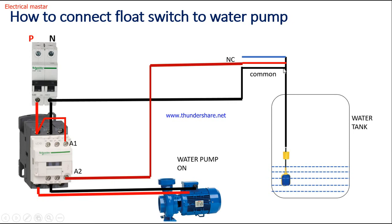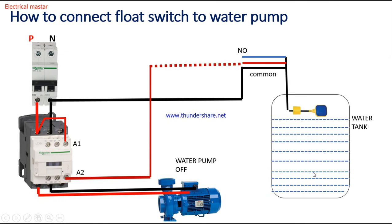Whatever you give to the common supply, you can receive it from the NC terminal. So what we do is take the neutral to connect to the common supply. When the switch is in the open position, the common will close to the normally closed contact, then the same neutral will be received from the NC terminal. It will be connected to the A2 terminal of the magnetic contactor, and the A1 will be connected directly with a loop wire from the power supply phase. So now the magnetic contactor will get energized and transfer power from the main supply to the water pump — so the water pump will be on.